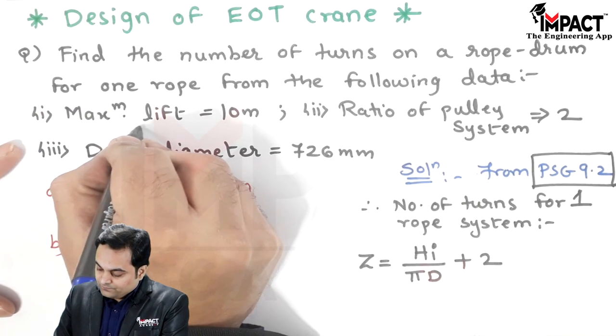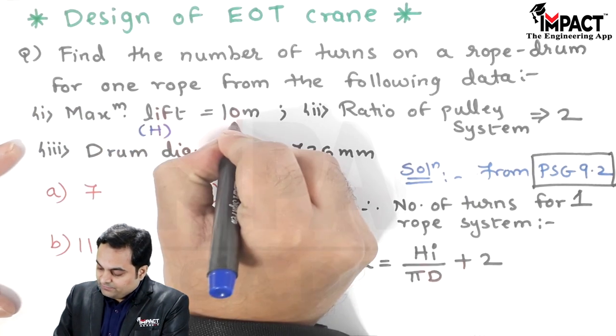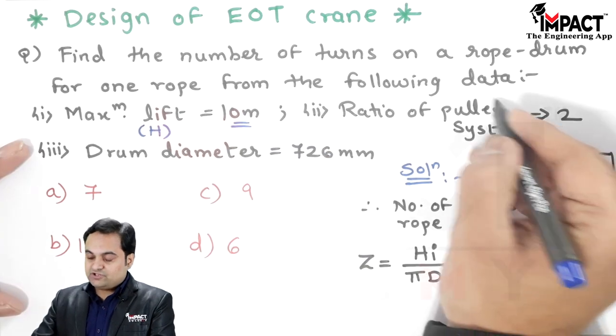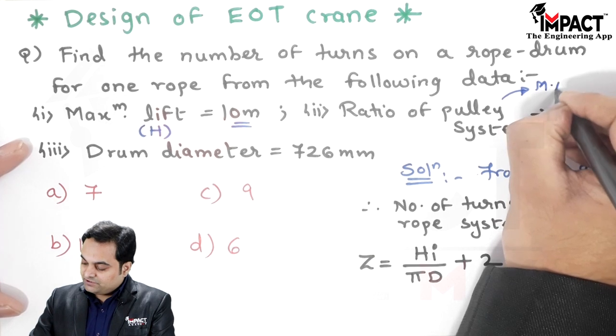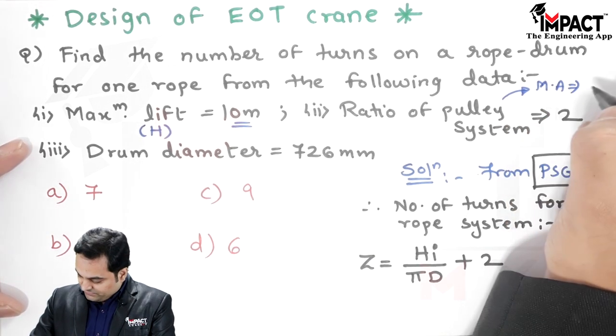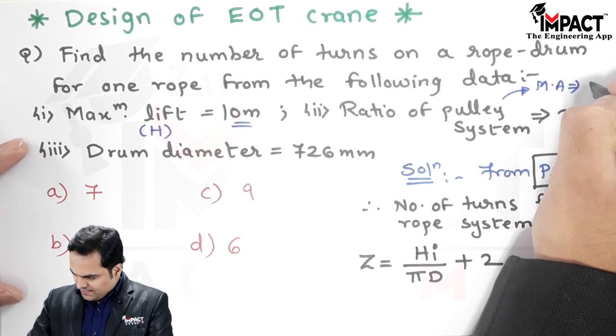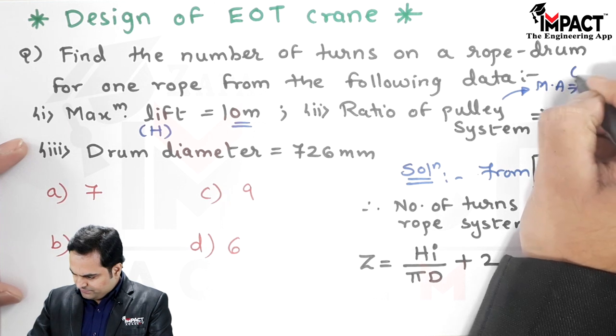Capital H is 10 meters, already known to us. Ratio of the pulley system is called the mechanical advantage, and here the mechanical advantage is given as 2, denoted by i. Then the drum diameter would be capital D.